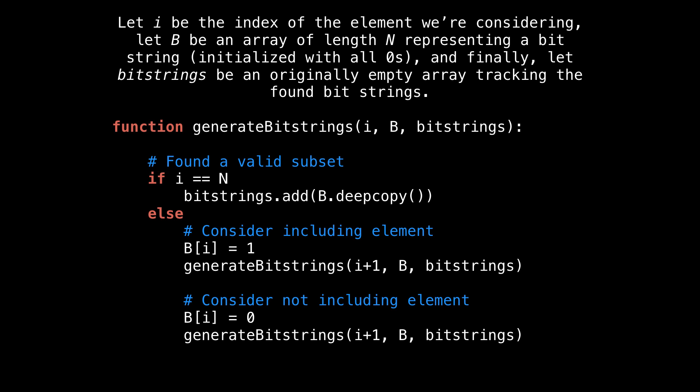The generate bit strings function takes three parameters. The first is the index we're considering. Then there's the array b, which represents the current bit string. And lastly, is the bit strings array, which we append found bit strings to every time the base case is reached.